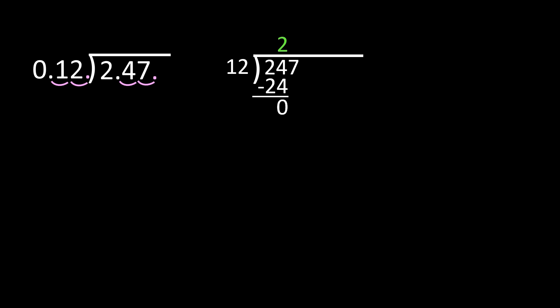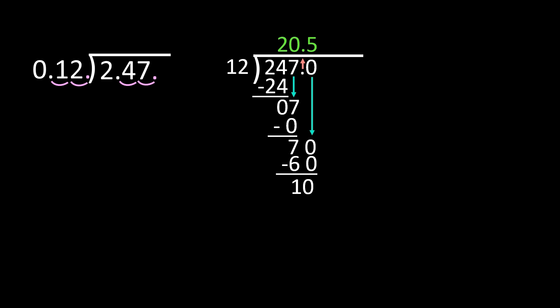Even in my subtraction steps, I'm going to be careful and keep my numbers lined up. From here, I need to bring down the 7. Because I brought a number down, I have to repeat my steps. 7 divided by 12 is 0. I do need to place the 0 in the quotient. 0 times 12 is 0. 7 minus 0 is 7. You're not going to put remainder 7 because you're working with decimals, so you need to add a decimal point. We're going to immediately bring it straight up into our quotient and add a 0 to bring down. Now I have 70 divided by 12. 70 divided by 12 is 5. 5 times 12 is 60. When I subtract 70 minus 60, I get 10.